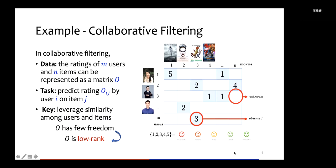The key is to leverage similarity among users and items, which means O has few degrees of freedom. Or, in other words, O is low rank.